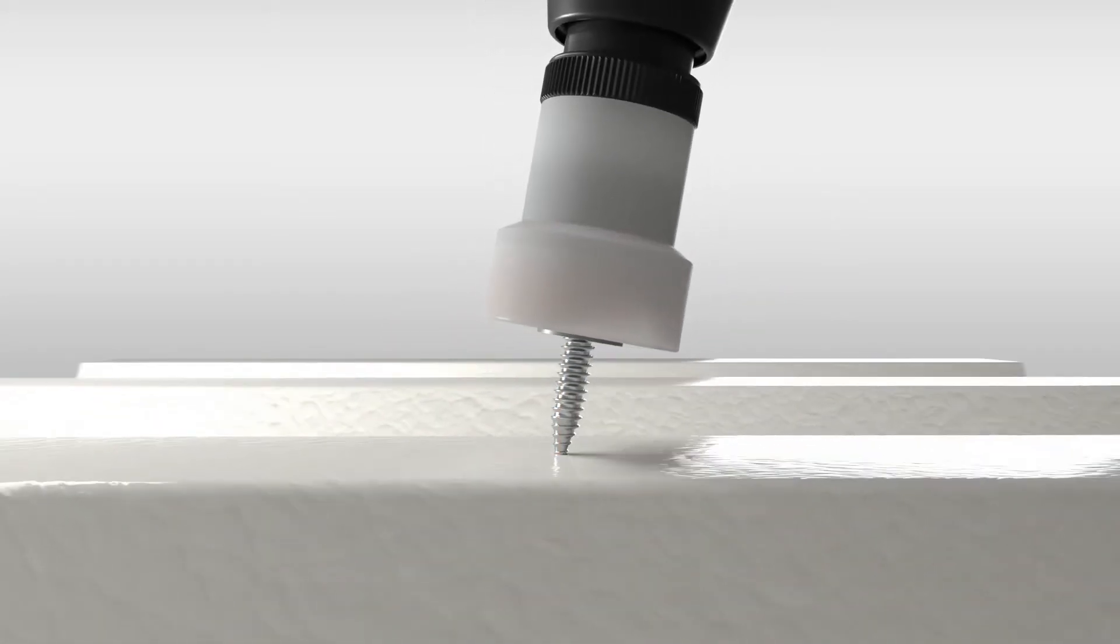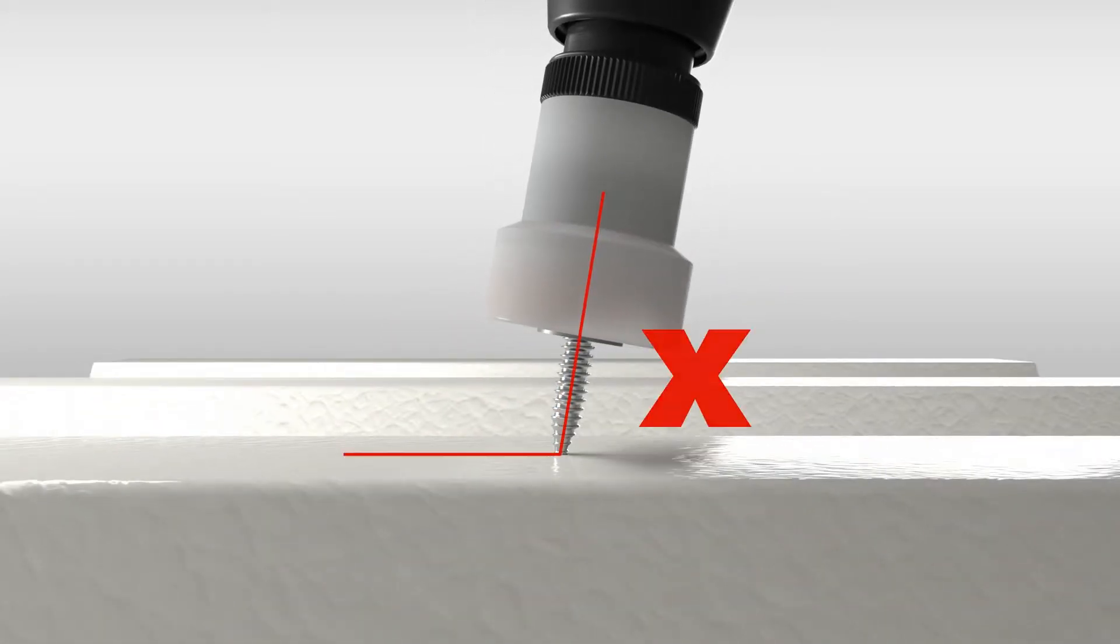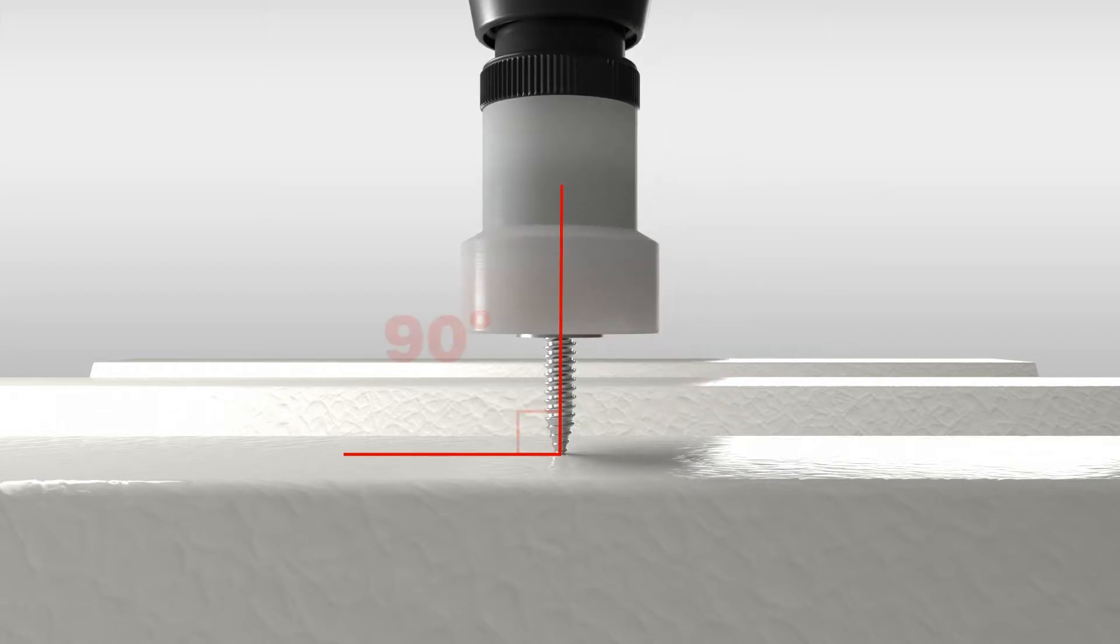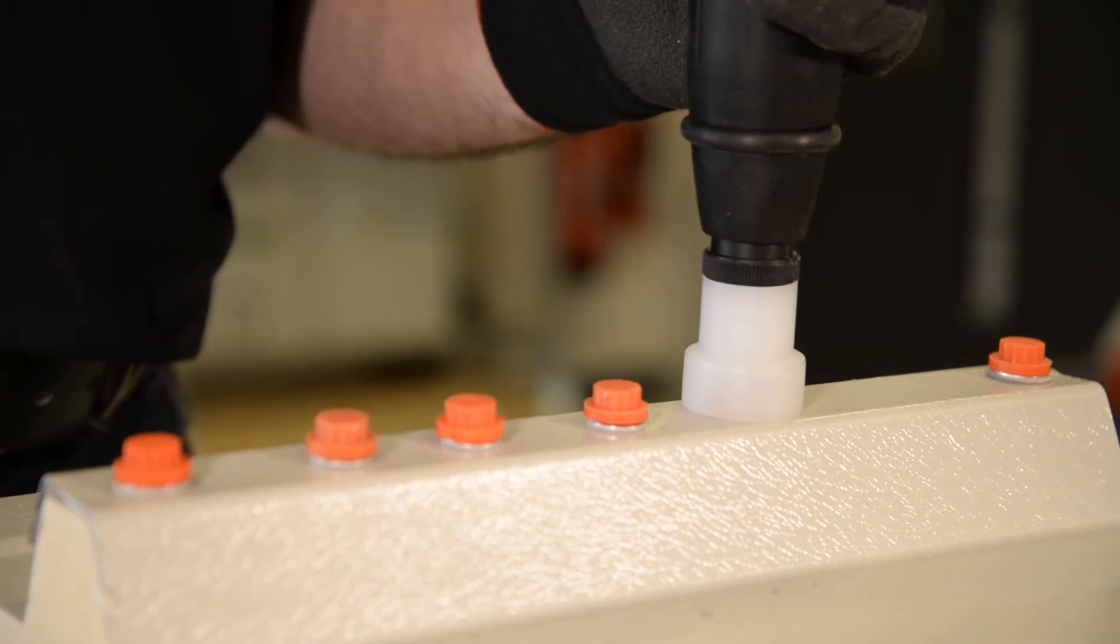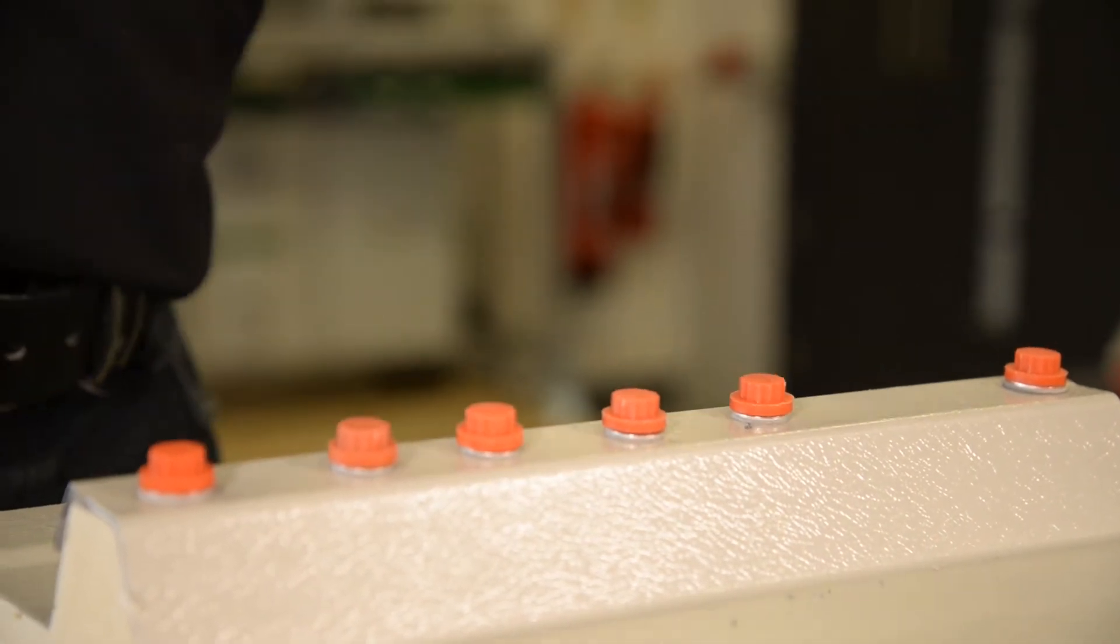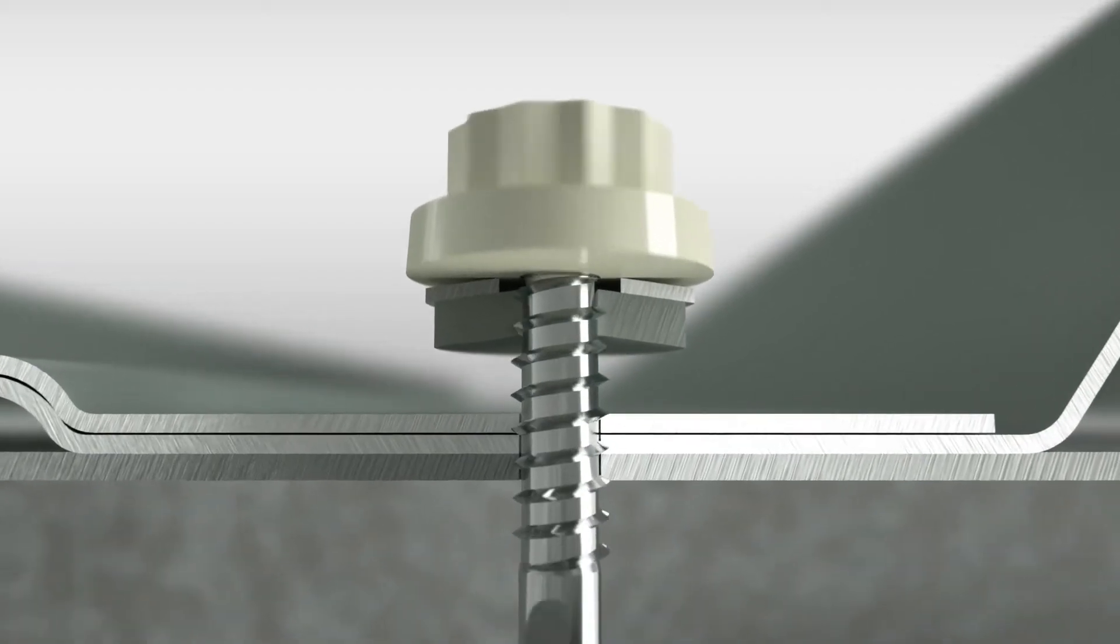For optimum thread engagement the fastener needs to drill nice and straight. That means looking to maintain a 90 degree angle from all points of the compass. And that sound means the fastener is secure and the clutch has disengaged.